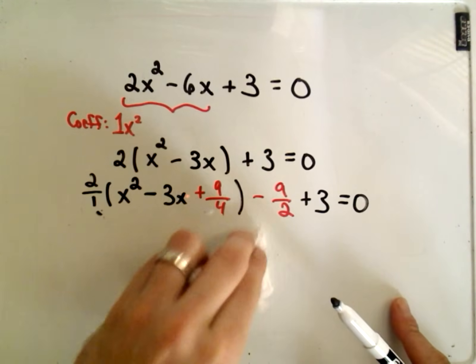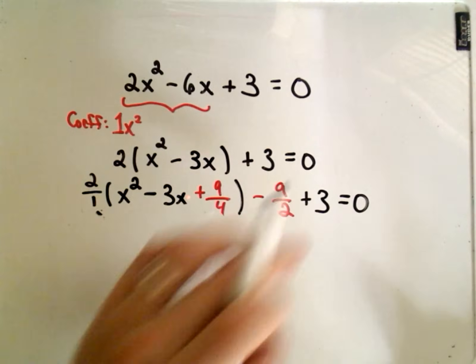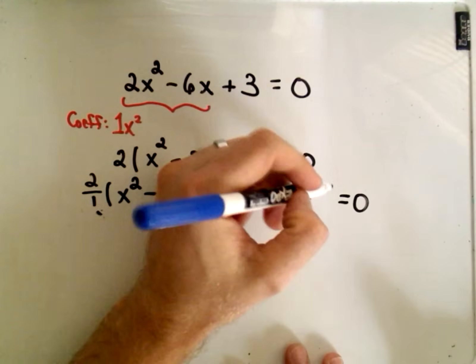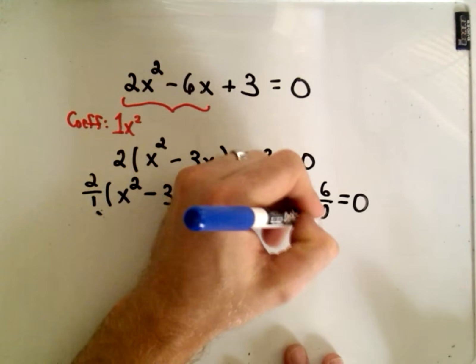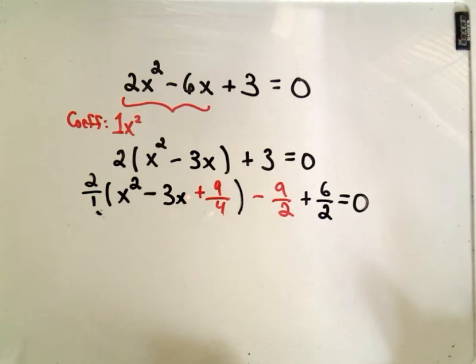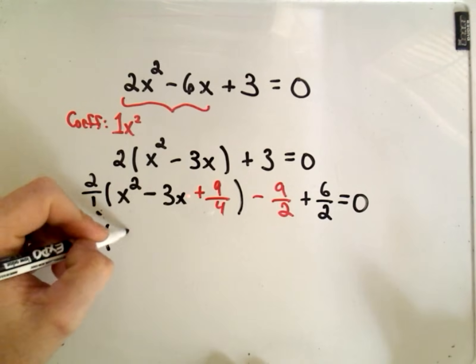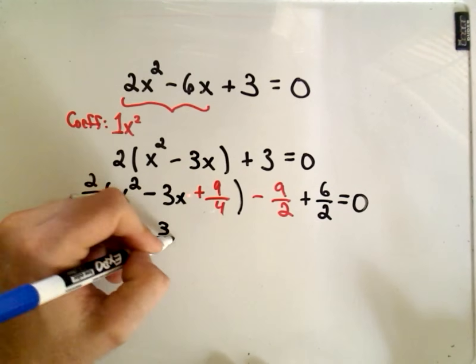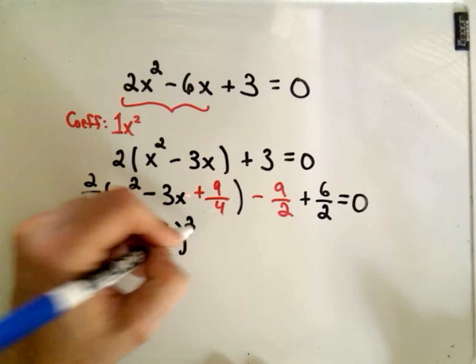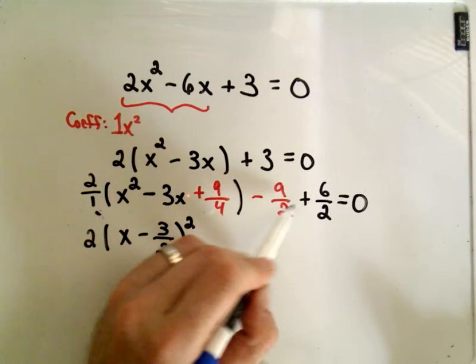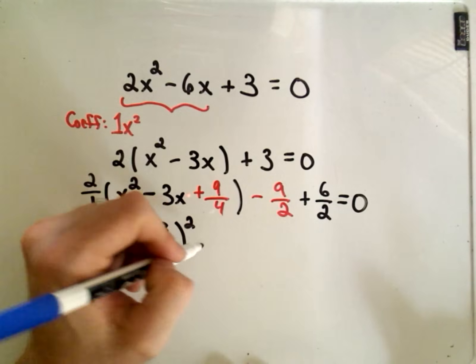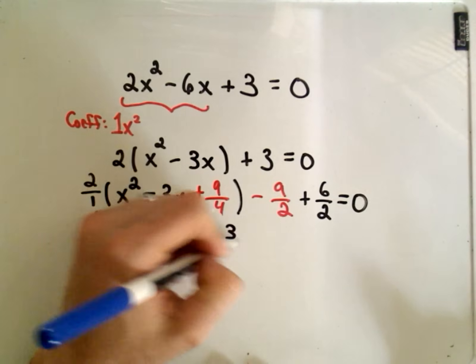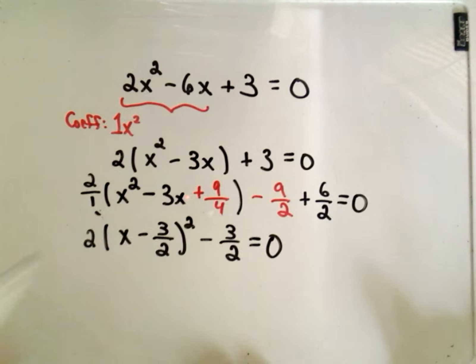Okay, so now it's just a little bit of algebra and arithmetic. So I'm going to write 3 as 6 over 2 if I get common denominators. So I've got 2, this factors is x minus 3 over 2 squared. And then I've got negative 9 over 2 plus 6 over 2. Well, that's going to give me negative 3 over 2 equals 0.